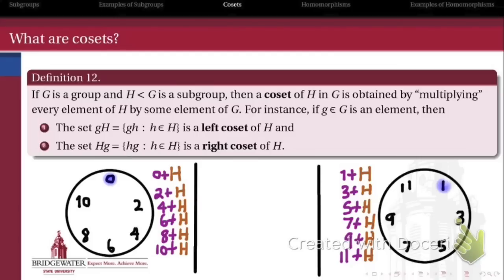So, in fact, there are only two different subgroups for this entire group Z12 and the subgroup H. These are the only cosets, sorry, of H that exist in Z12.